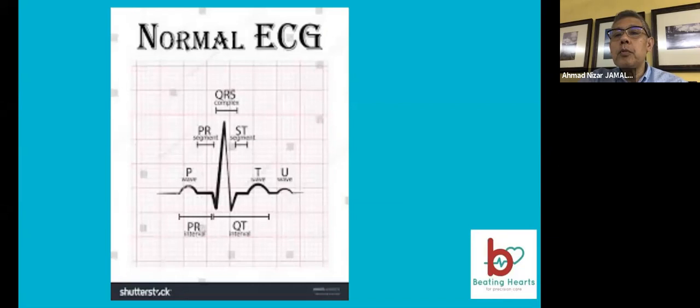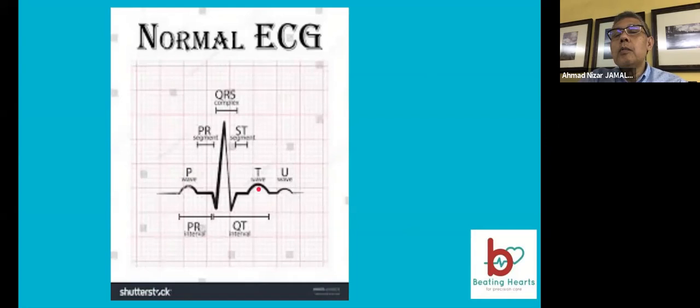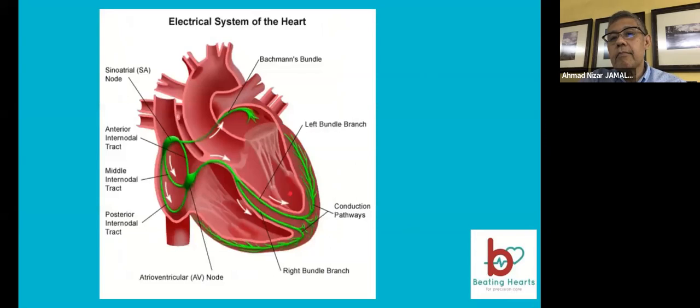The QRS represents depolarization of the ventricle. Finally, you have the T wave, which denotes the repolarization process of the ventricles. There is repolarization of the atrium as well, but it is usually buried within the QRS complex.